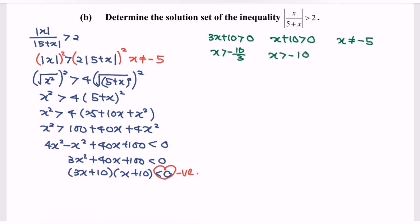We illustrate the situation on the number line. We have negative 10 followed by negative 10 over 3. Do remember the restriction where we are not allowed to substitute the value negative 5. So we illustrate the situation on the number line where we have empty circle towards the right, empty circle towards the right.